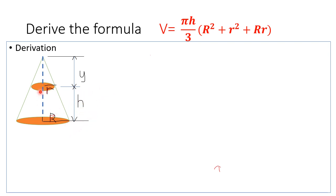We will derive the truncated volume from the cone — meaning this portion up to this one. We have V_R, the big R: V_R equals one-third pi R squared times (h plus y). And the small r: V_r equals one-third pi r squared times y.